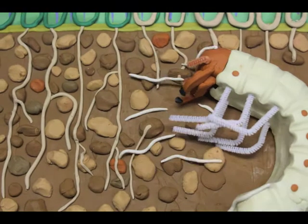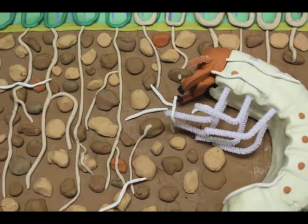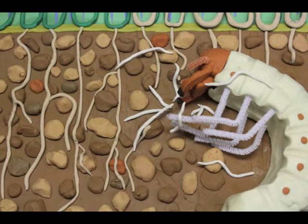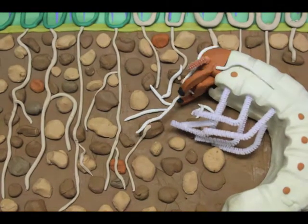The nematodes attack, trying to get into the grub's body. It fights back with its legs and sharp mandibles, but is quickly overwhelmed.